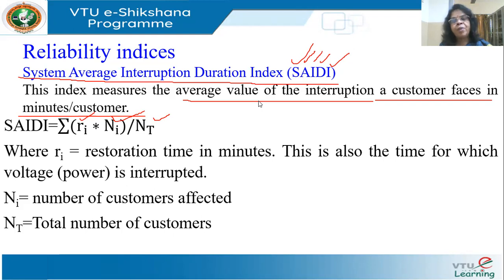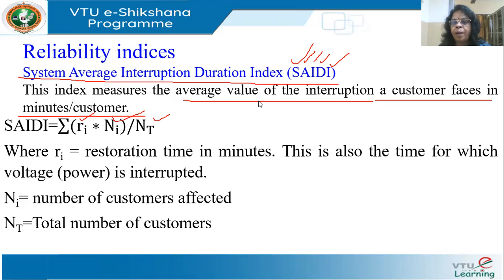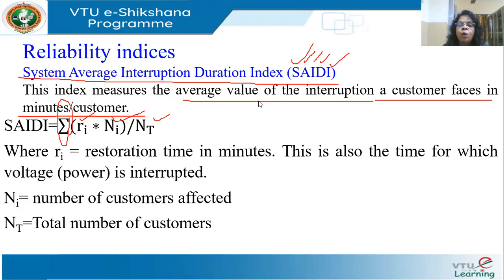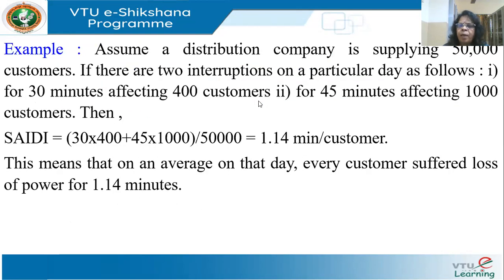Because today some customers may be affected, tomorrow others may be affected — today the feeder supplying area X got affected, tomorrow the feeder supplying area Y may get affected. So RI is the restoration time for every interruption. For each interruption, what is the restoration time and how many customers have been interrupted? The sum of all that as a ratio of the total number of customers is called SAIDI — System Average Interruption Duration Index.